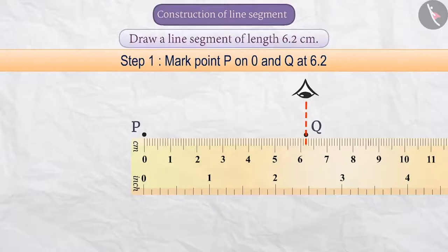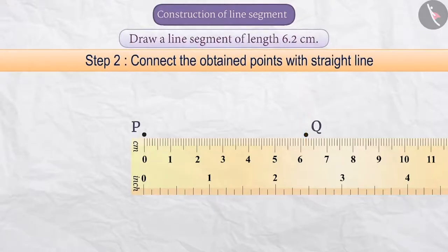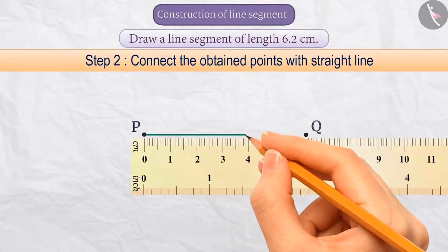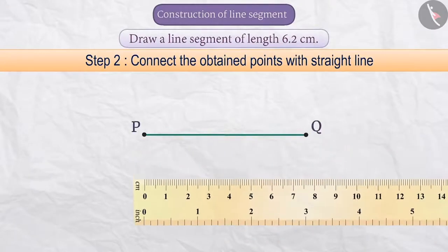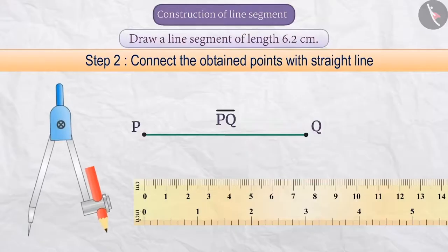Step 2: We will connect the obtained points with a straight line. This will give us the line segment PQ. We have another method to draw a line segment, in which we also use compass with ruler. So, let's understand this method.